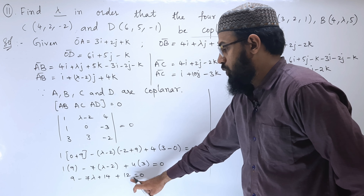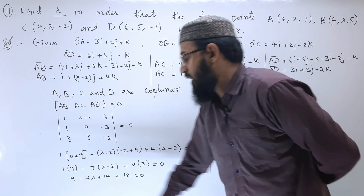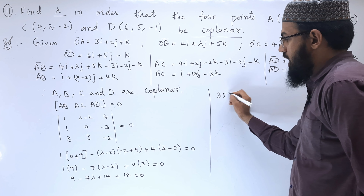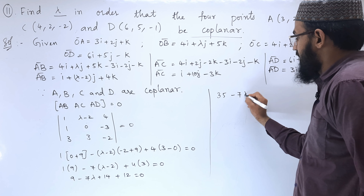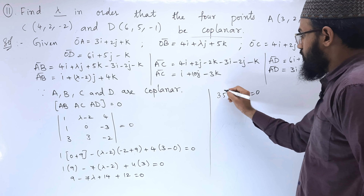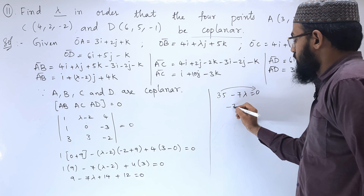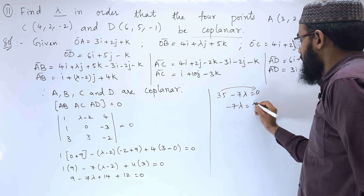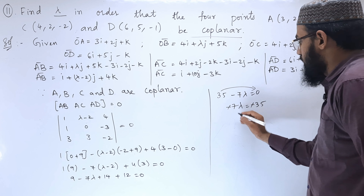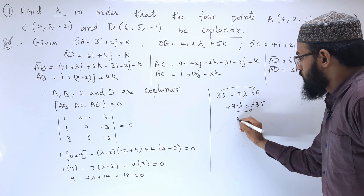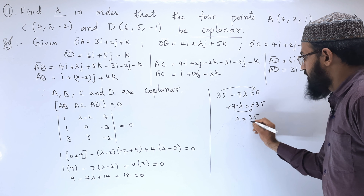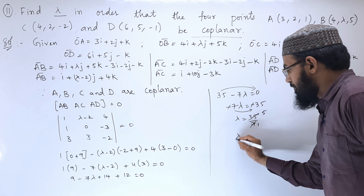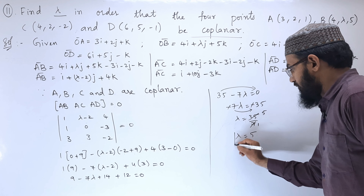So 9 + 14 + 12 = 35, giving 35 - 7λ = 0. Moving 35 to the other side: -7λ = -35, the negatives cancel, and dividing by 7: λ = 35/7 = 5. So lambda equals 5.